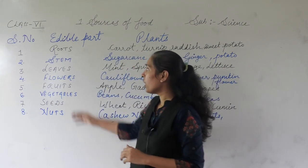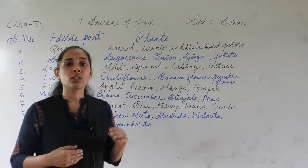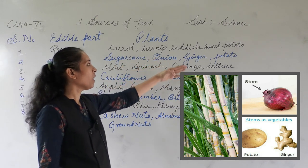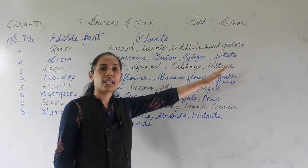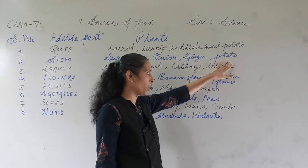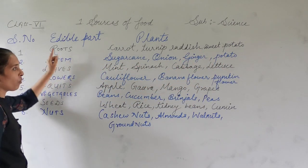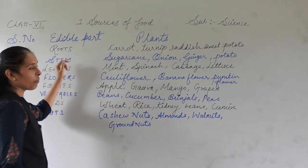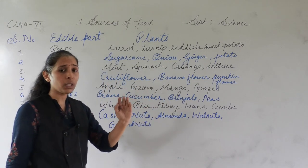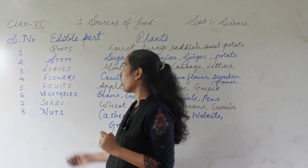Let's move to the next edible part, which is stems. There are certain stems that we eat, and the examples of edible stems are sugarcane, onion, ginger, potato, and also turmeric. Note that there is a major difference between sweet potato and potato — sweet potato is a root while potato is a stem. So don't get confused between the two. These all are edible stems.